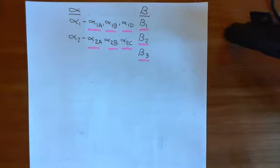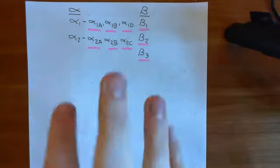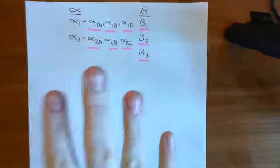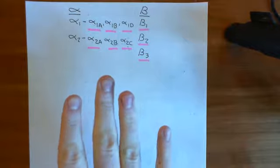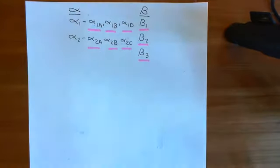Welcome to this next video in which we are discussing the adrenoceptors. We've discussed that there are nine currently known adrenoceptors, with potentially a few more that are putative. There is, for instance, a beta-4 receptor that's very putative.